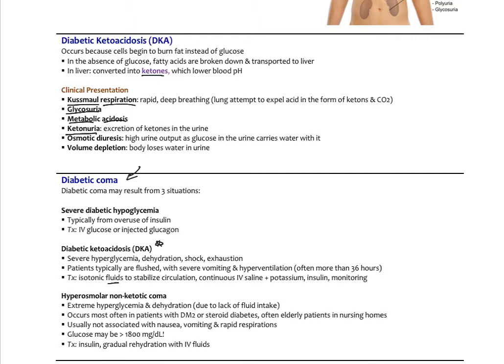You can also develop diabetic coma from severe hypoglycemia. That typically happens in type 1 patients who accidentally overdose on insulin, taking too much and developing severe hypoglycemia. The treatment here would be IV glucose with injected glucagon.